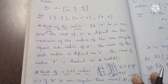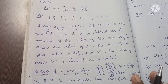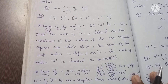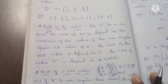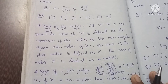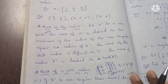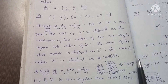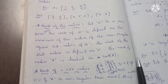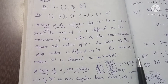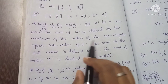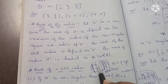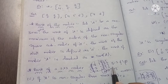Let A be a non-zero matrix. The rank of A is defined as the maximum order of a non-singular square sub-matrix of A. The rank of a null matrix is zero. The rank of matrix A is denoted as rank(A). The rank depends on the maximum order of the non-singular sub-matrix, whether it is a 3x3 or 2x2 matrix.